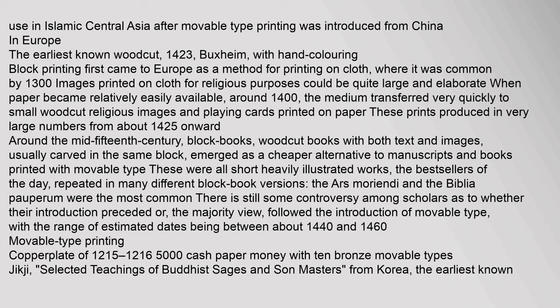In Europe, the earliest known woodcut dates to 1423, from Buxheim, with hand-colouring. Block printing first came to Europe as a method for printing on cloth, where it was common by 1300. When paper became relatively easily available around 1400, the medium transferred quickly to small woodcut religious images and playing cards. Around 1425, prints were produced in very large numbers. By the mid-15th century, block books — woodcut books with both text and images usually carved in the same block — emerged as a cheaper alternative to manuscripts. The most common were the Ars Moriendi and the Biblia Pauperum. Scholars still debate whether their introduction preceded or followed the introduction of movable type, with estimated dates between about 1440 and 1460.